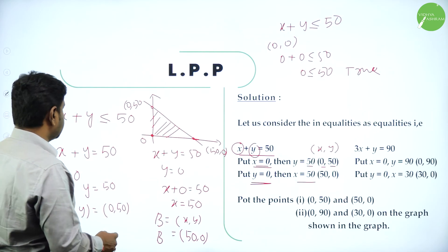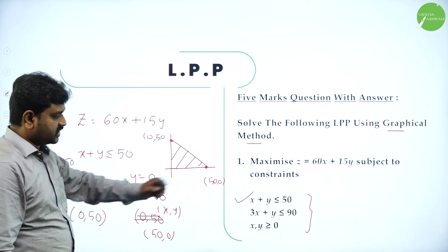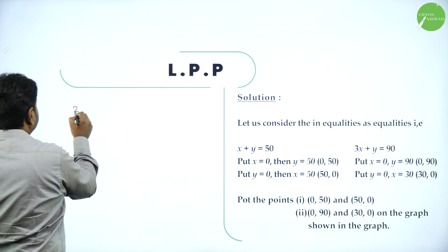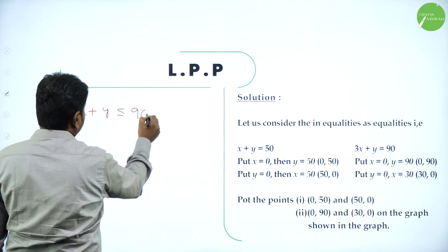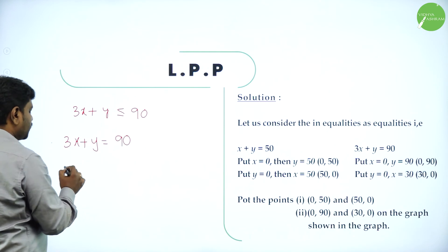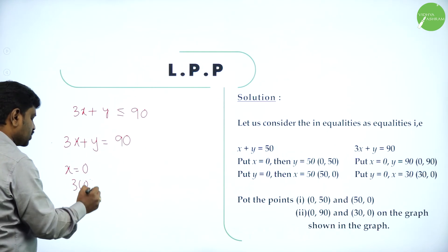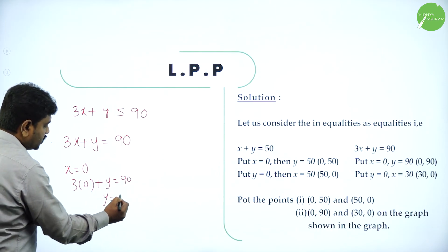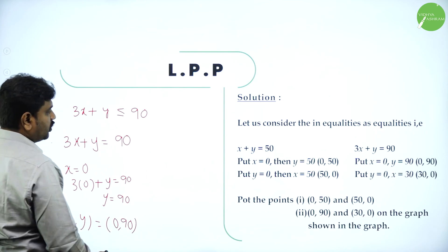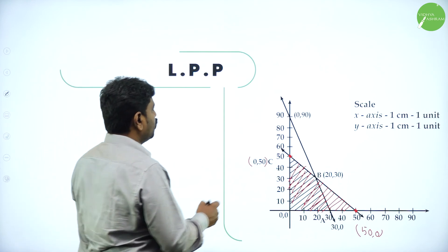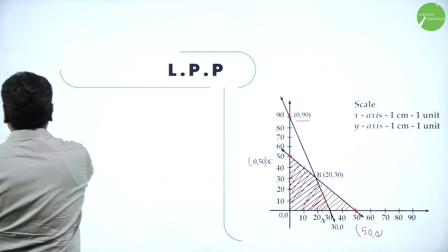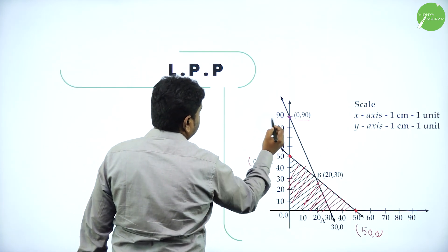Now we draw the second constraint: 3x + y ≤ 90. Take 3x + y = 90. Put x = 0: 3(0) + y = 90, so y = 90. We get the point (0, 90). This is on the y-axis. Using a different color for the second line, plot (0, 90).